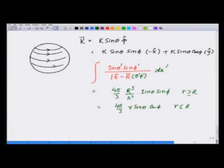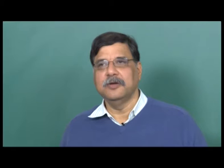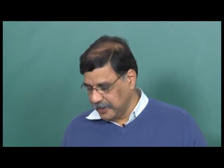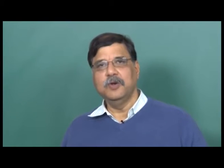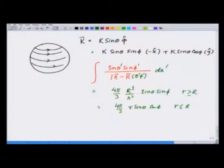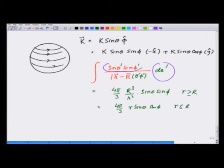I want to show how this integral can be evaluated using the knowledge of electrostatics and potentials. For this, we look for a surface charge distribution — since I am integrating over a surface — that has this dependence over θ and φ, which is very easy to find.